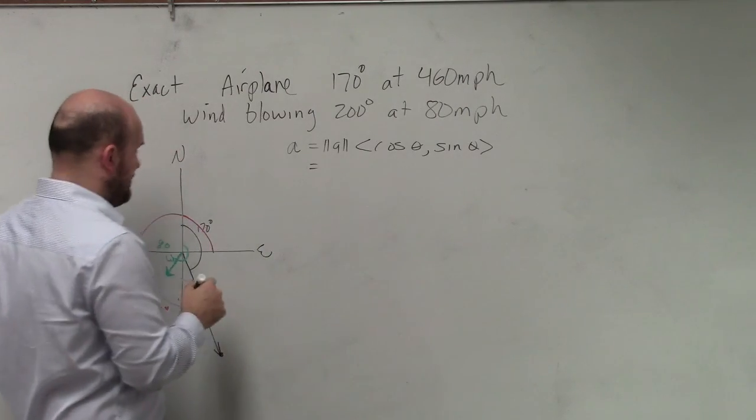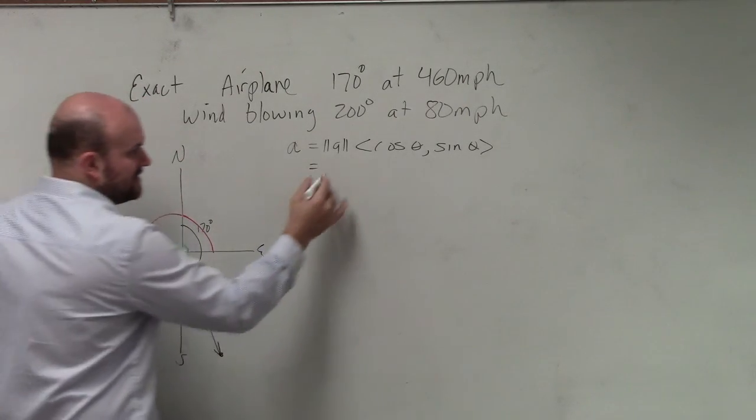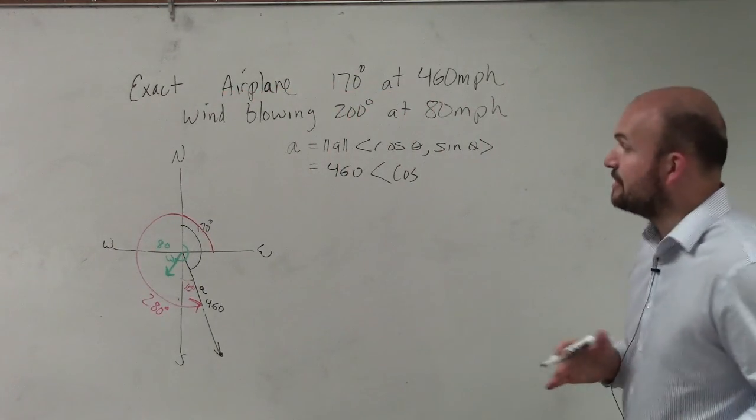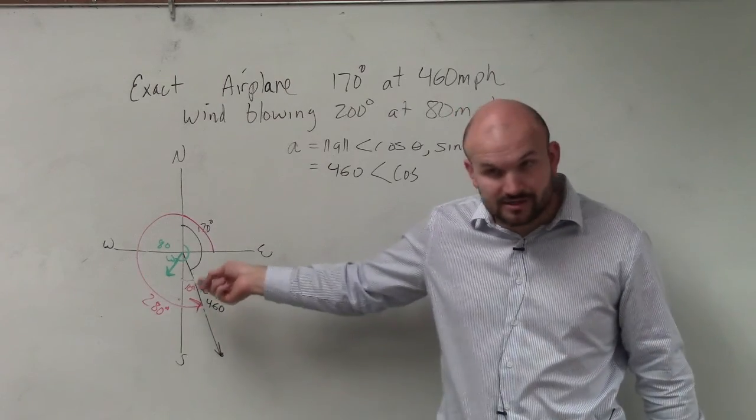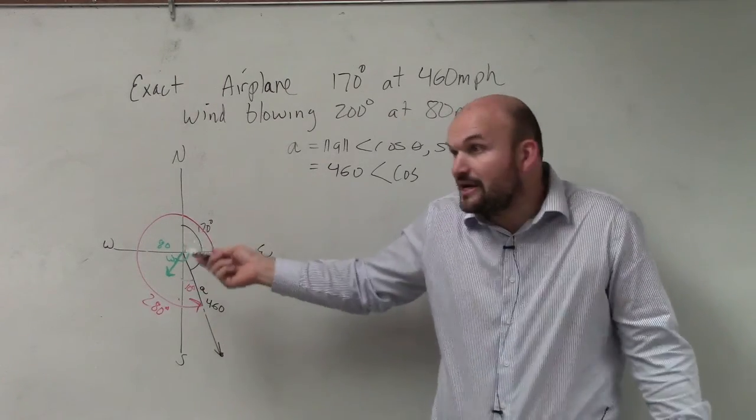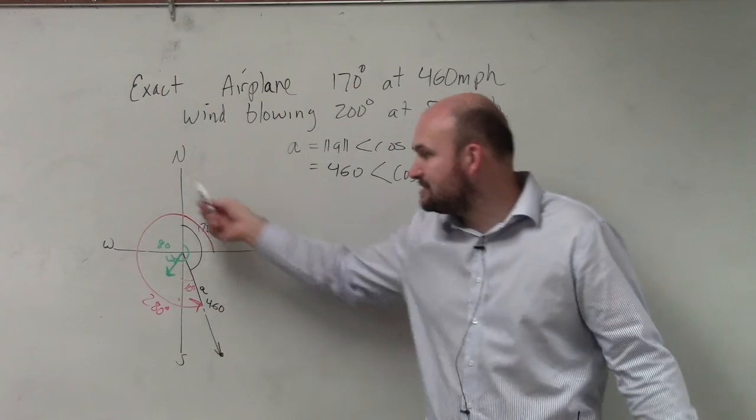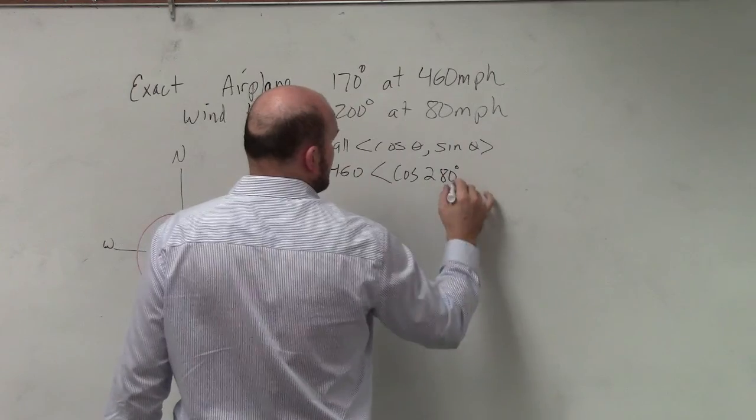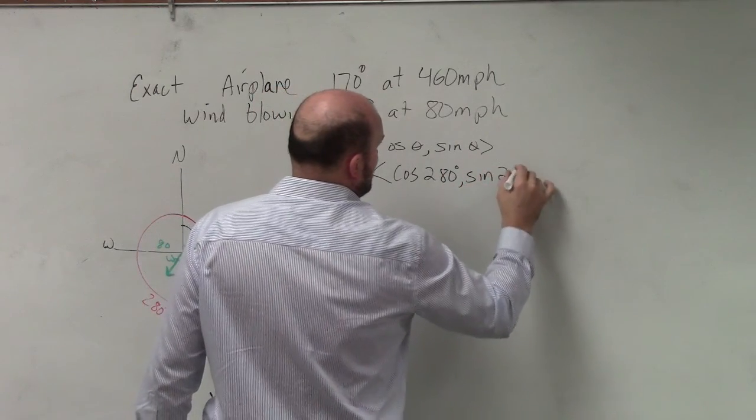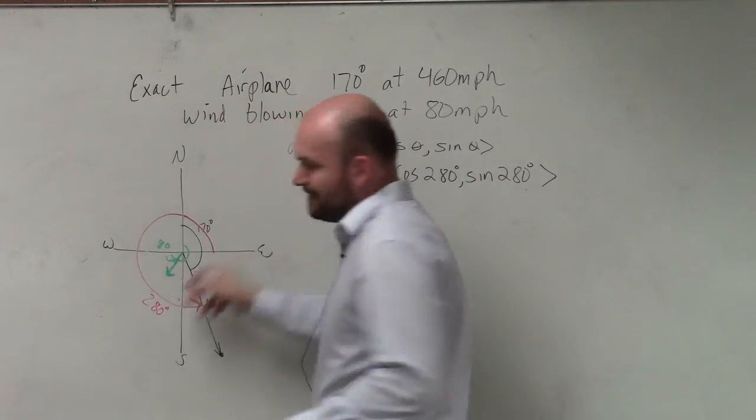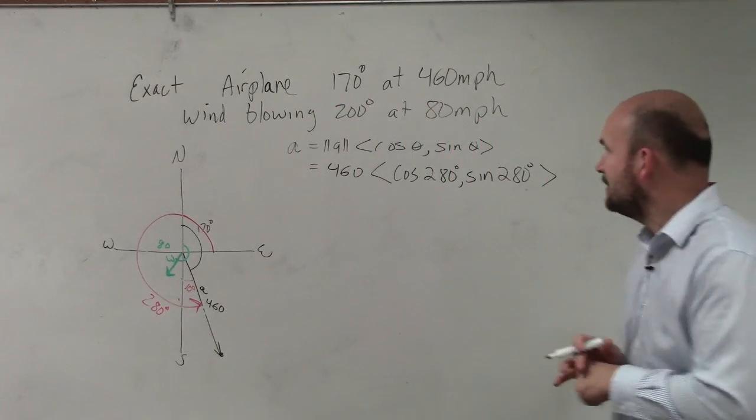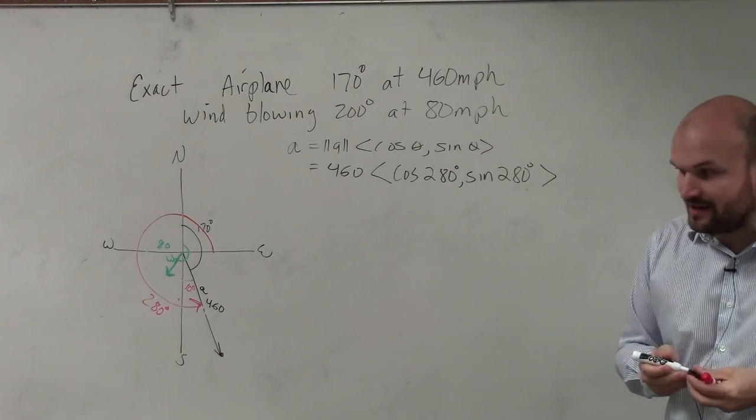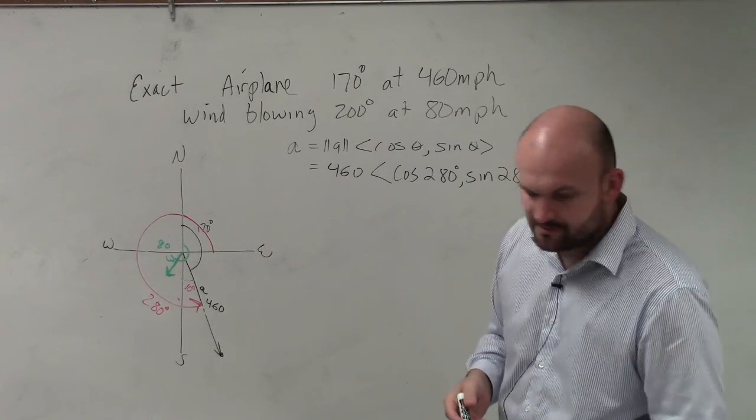So therefore, our magnitude in this case is going to be our speed, so that's going to be 460. And that's going to be the cosine times your angle. Now again, don't get trapped using this 170 degree bearing, because your calculator doesn't know 170 degrees as your bearing. It only knows the standard position, which is 280 degrees. You could use the negative form of that, but let's just get into the form of using always the positive angle. So now, we just need to simplify this using our calculator.